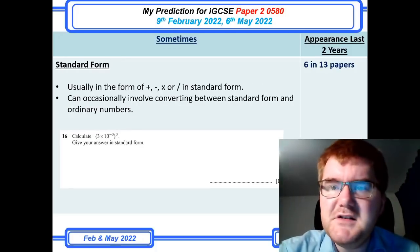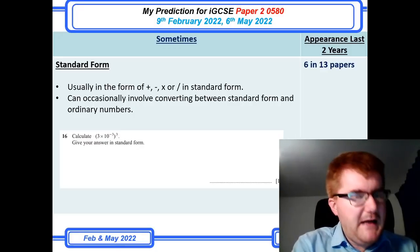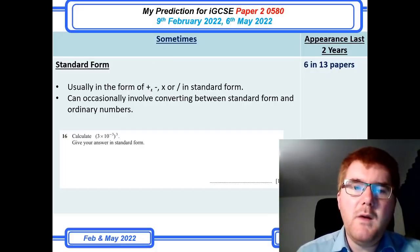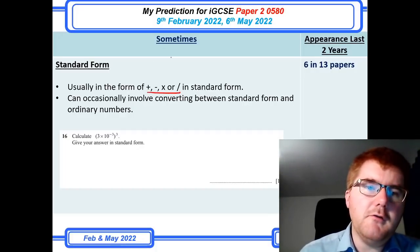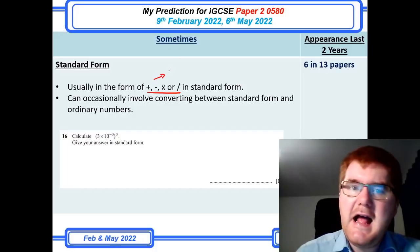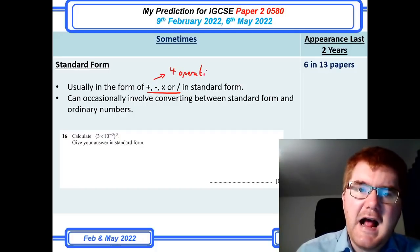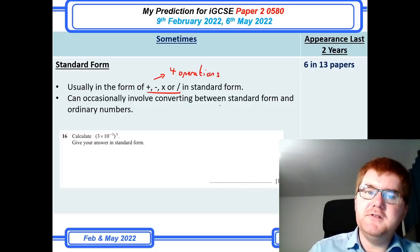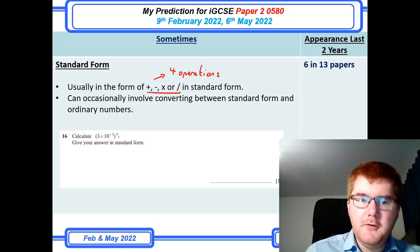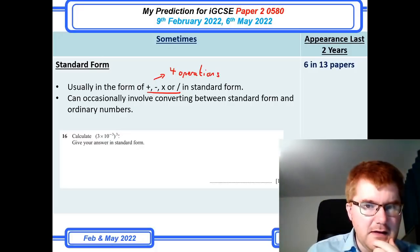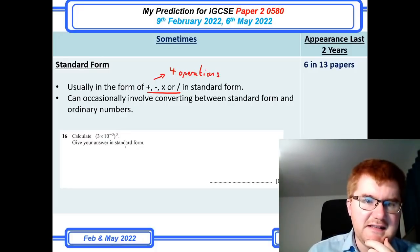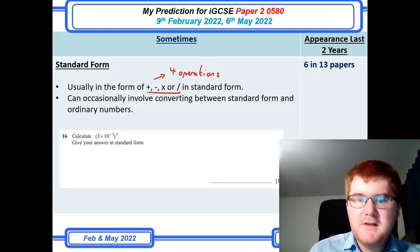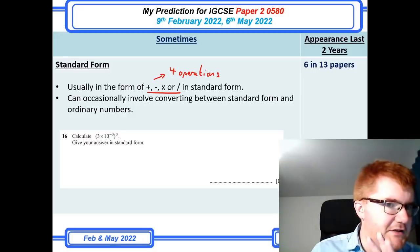Standard form — I've divided indices up with standard form as a separate topic, and even on its own it comes up 16 in 13 papers. You need to be aware of how to do the four operations: add, subtract, multiply, and divide in standard form, and sometimes they'll get you to convert between standard form and ordinary numbers as well. This question here is an interesting take on it — it comes in the middle of the paper, so it can range from easy to medium in difficulty.